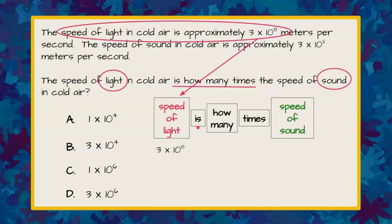So 3 times 10 to the 8th, we're going to represent with an equal sign, how many - we don't know how many. Times means multiply, and the speed of sound is 3 times 10 squared.